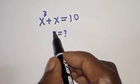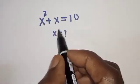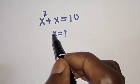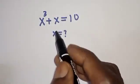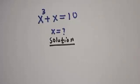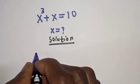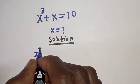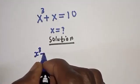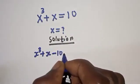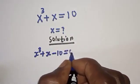Hello, welcome to Magis. In this class I want to find the value of s from this equation: s raised to power 3 plus s is equal to 10. Like, share, comment, and subscribe. Solution: we have s raised to power 3 plus s minus 10 is equal to 0.